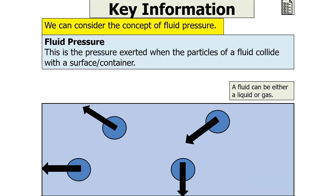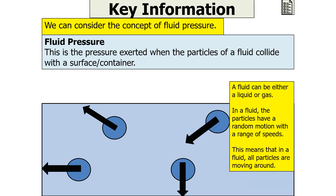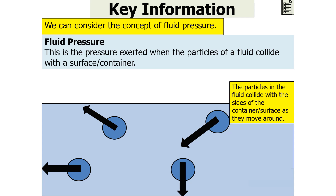Fluid pressure is the pressure exerted when the particles of a fluid collide with a surface or container. The fluid can either be a liquid or a gas. It's important to note that the definition of a fluid is that it's a substance that flows. In a fluid, the particles will have a random motion with a range of speeds, meaning all the particles are moving around in random directions.